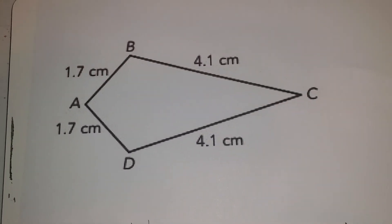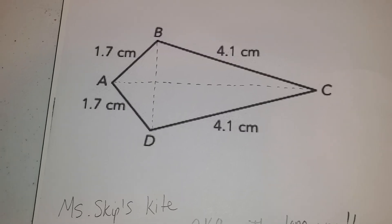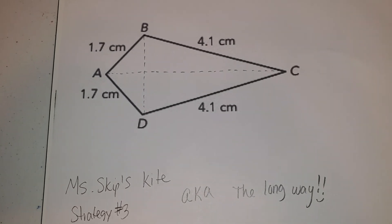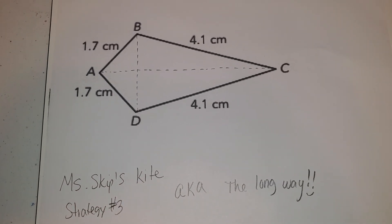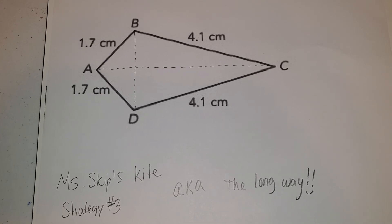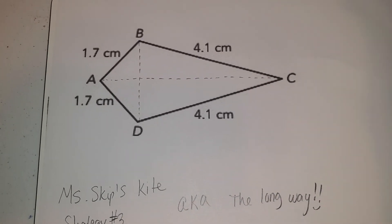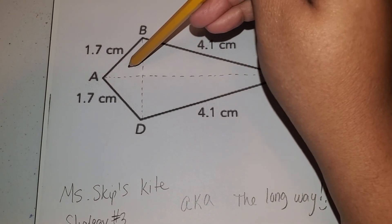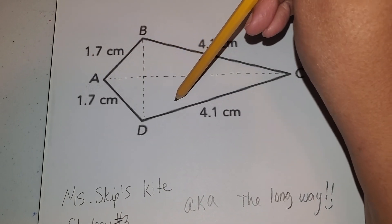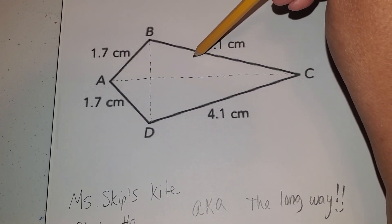So here's Miss Skip's strategy, the long way. There we go. So Miss Skip is going to use Molly and James's strategy together. She actually has separated hers into one, two, three, four triangles.